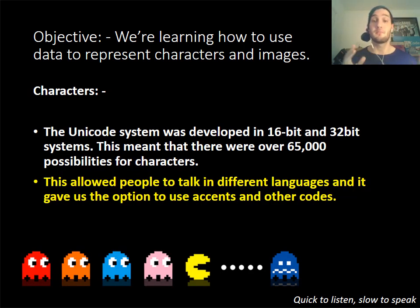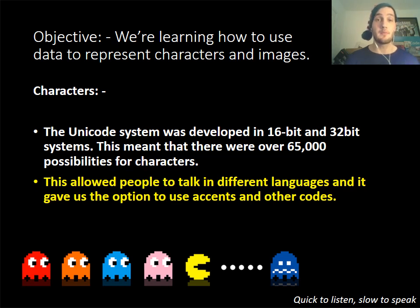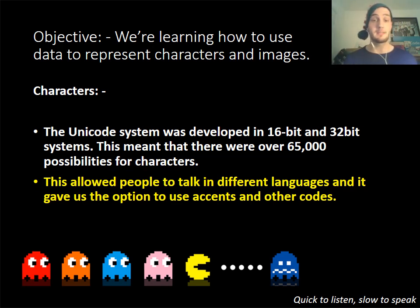Unicode was developed between 16-bit and 32-bit, because there are different numbers of systems, and with computer systems increasing over time there will be even more characters available. Because of that, we can now use different codes, different accents, and we are able to get a larger number of characters. If you have to explain the difference in your exam, say that ASCII has a lower number of characters whereas Unicode has a higher number. Also explain that ASCII uses a single byte (8-bit), whereas Unicode can go between two bytes and four bytes.